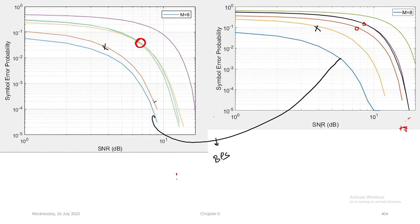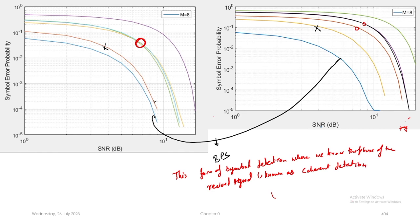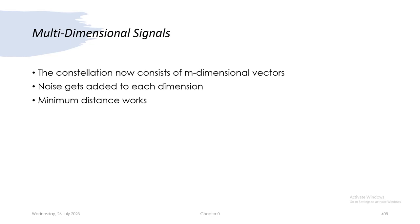That is all about our discussion on various constellations with coherent detection. A form of symbol detection where the phase of the received signal is known is called coherent detection. There is one more form, which we will now address.